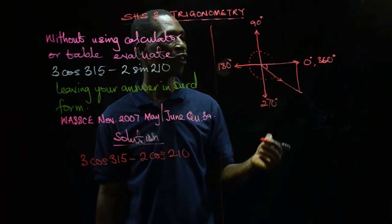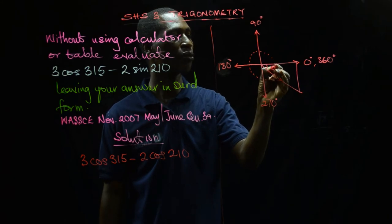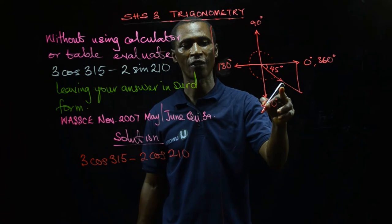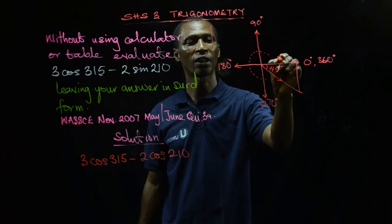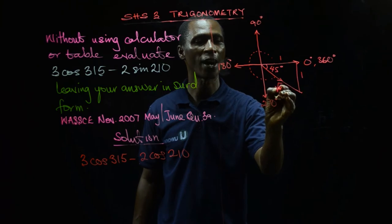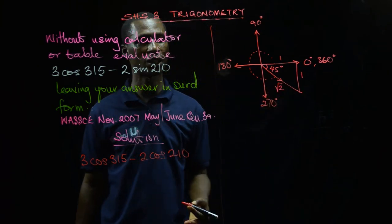If I subtract 315 from 360, I'll be left with the angle here being 45 degrees. Because the angle is 45 degrees, it means the triangle is isosceles. So here will be √2. Just remember this format.